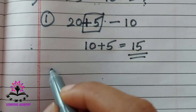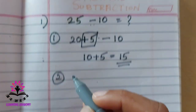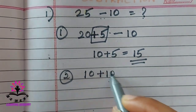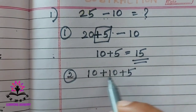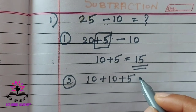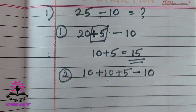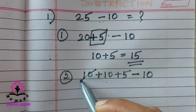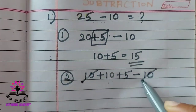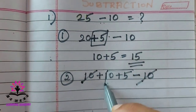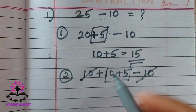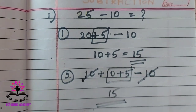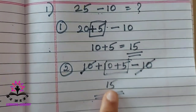One more method: write 25 as 10 plus 10 plus 5. So 10 plus 10 is 20, plus 5, and minus 10. One of the 10s gets cancelled with minus 10. What is remaining? 10 plus 5, it is 15. This is the first method, and this is the second method.